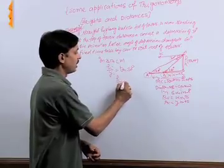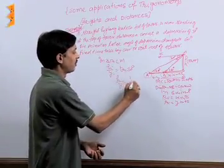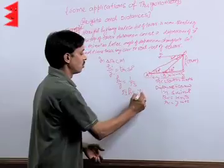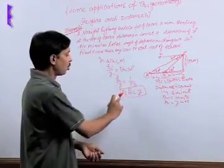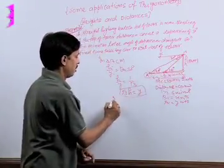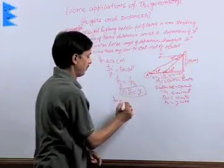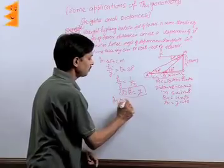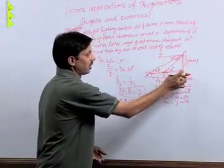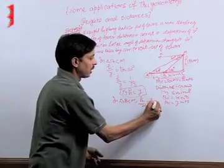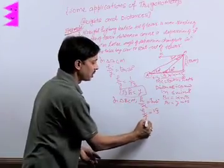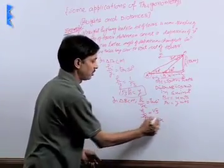Tan 30 equals H upon Y, so 1 by root 3 equals H upon Y, giving us root 3 H equals Y — this is equation 1. Now in the second triangle BCM, we apply H upon X, where H is the perpendicular and X is the base, with elevation 60 degrees. So tan 60 equals root 3, giving us H equals root 3 X — equation 2.